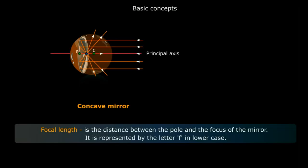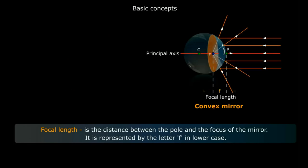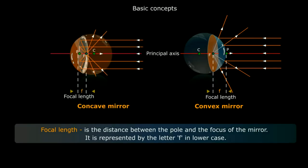Now, focal length. Focal length is the distance between the pole and the focus of the mirror — that is the distance between P and F, represented by the letter small f. The focal length of a concave mirror and also of a convex mirror is denoted by small f. Observe in both mirrors: the distance between P and F is the focal length.